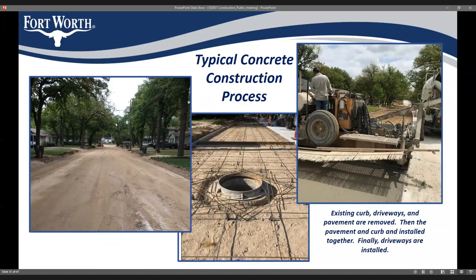For concrete streets, all existing pavement, curbs, and driveways will be excavated first. Then the pavement and curb are installed together — monolithically — so the curb is integrated with the pavement itself. The contractor will most likely do half the street at a time, as shown in the third picture where they're doing one lane. When that is done, they'll come back and install the new driveways.